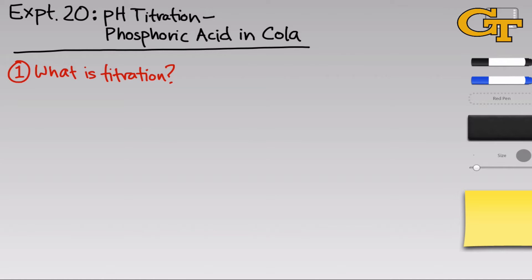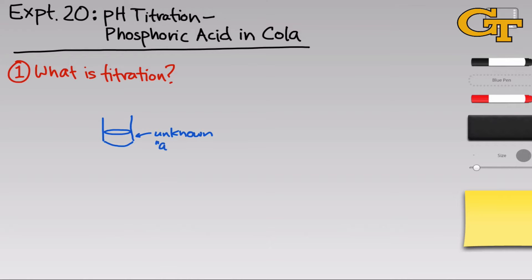Our first big question is: what is titration as an experimental method? There are a few key elements to any titration. The first thing we need is a beaker containing some solution — typically the unknown solution. The analytical chemistry name for it is the analyte; this is the species we're analyzing. When it comes to pH titration, this is typically an acid or base whose concentration is unknown. We also need another solution of known composition that comes in an instrument called a burette — we call this the titrant.